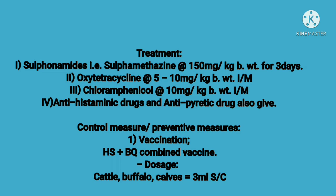Antihistamine and antipyretic drugs should also be given, such as meloxicam injection, which is analgesic, antipyretic, and anti-inflammatory, at the rate of 0.3 to 0.5 mg per kg body weight — 5 to 10 ml IM for large animals and 1 to 2 ml IM for small animals.